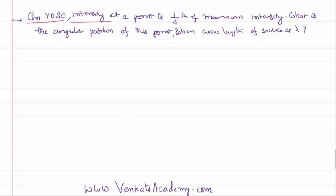It is given that the intensity at a point on the screen of the Young's double slit experiment is 1/4th of the maximum intensity. What is the angular position of this point when the wavelength of the source used is lambda?